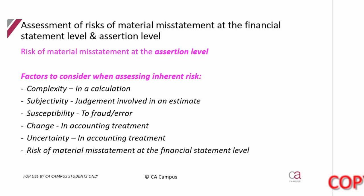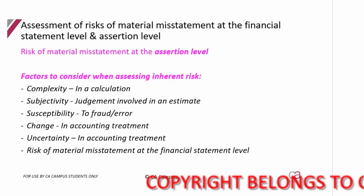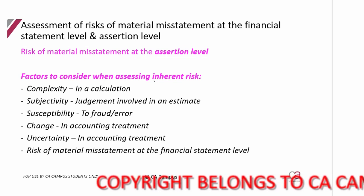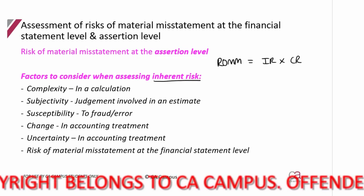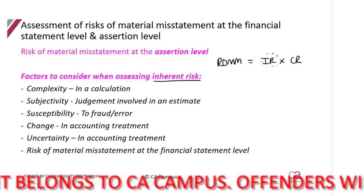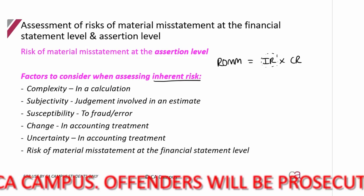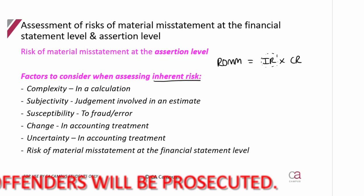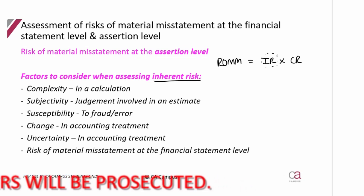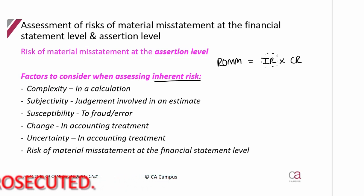We said it's one thing to identify the risk at the assertion level, but now as auditors we have to go and assess that risk at the assertion level. The first element of the risk of material misstatement is inherent risk, so we've got to assess the inherent risk irrespective of controls. We have to consider if we believe this risk is susceptible to a misstatement for the assertion.